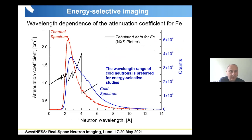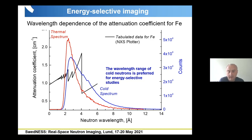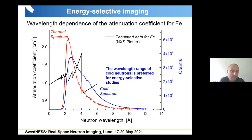Therefore, it is possible to plot diagrams where we have the energy distribution of neutrons coming from the neutron source — the so-called spectra — in terms of not only energy but also neutron wavelengths. Here we see the representation in neutron wavelengths of thermal and cold spectra measured at the source FRM1 in Munich. We see the broadening of the cold neutron spectrum in the direction of longer wavelengths, meaning lower energies.